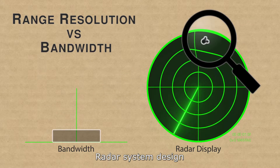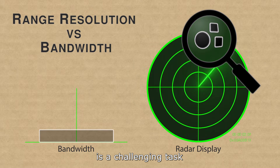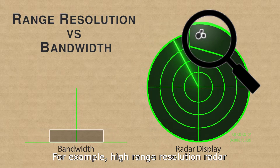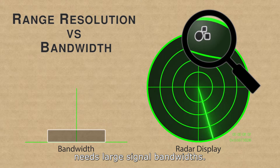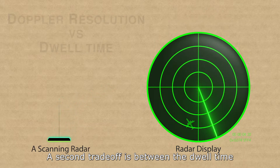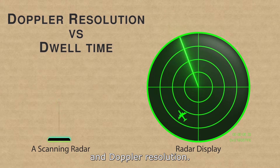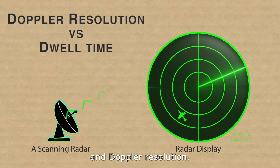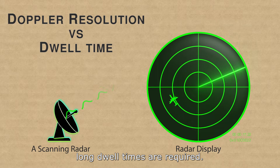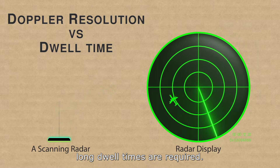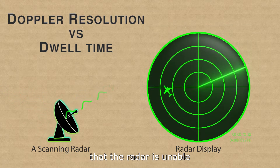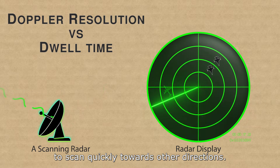Radar system design is a challenging task that suffers from many trade-offs. For example, high range resolution radar needs large signal bandwidths. A second trade-off is between the dwell time and the Doppler resolution. To detect fast moving targets, long dwell times are required. However, long dwell times imply that the radar is unable to scan quickly towards other directions.